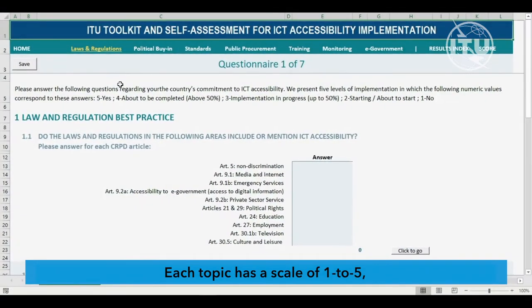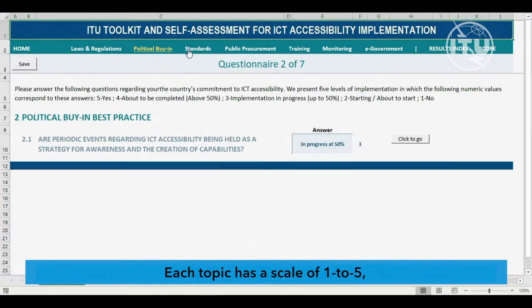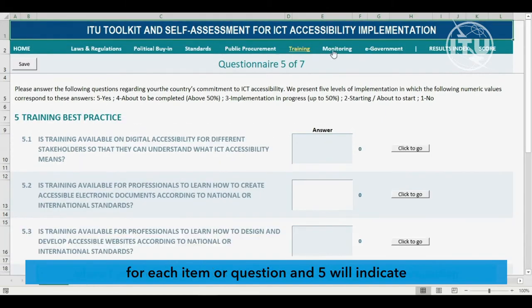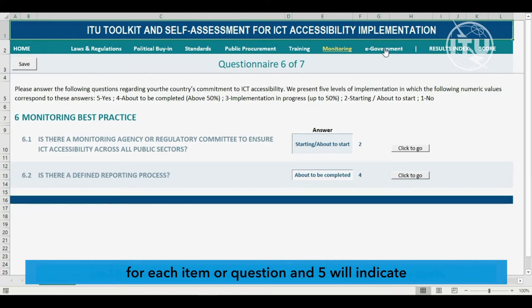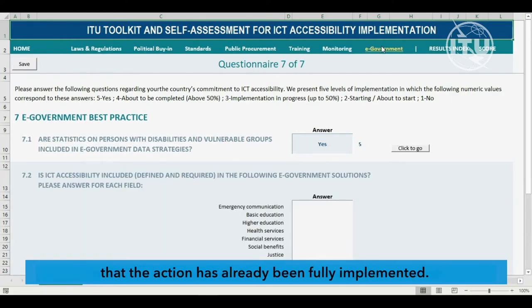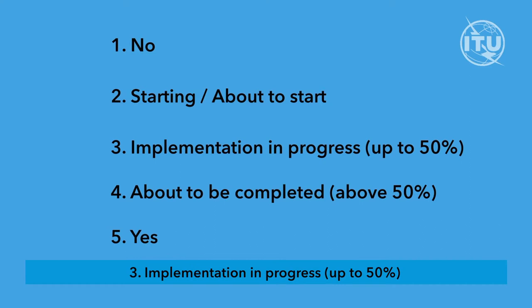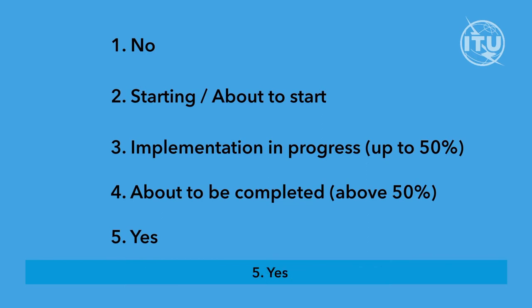Each topic has a scale of 1 to 5, where 1 indicates the absence of a plan or action for each item or question, and 5 indicates that the action has already been fully implemented. The scale is as follows: 1 — No; 2 — Starting; 3 — Implementation in progress, up to 50%; 4 — About to be completed, above 50%; 5 — Yes.